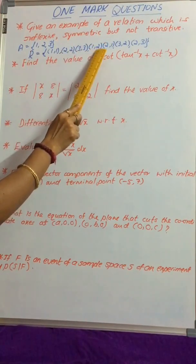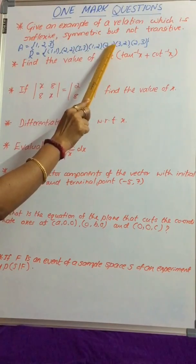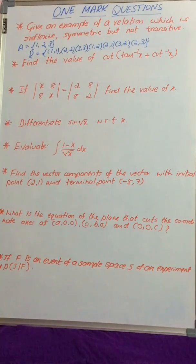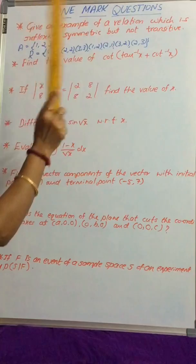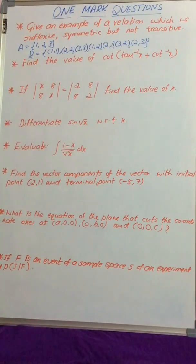Along with this, (1,2) belongs to R and (2,1) also belongs to R, so it is symmetric. (3,2) belongs to R and (2,3) belongs to R, so it is symmetric.